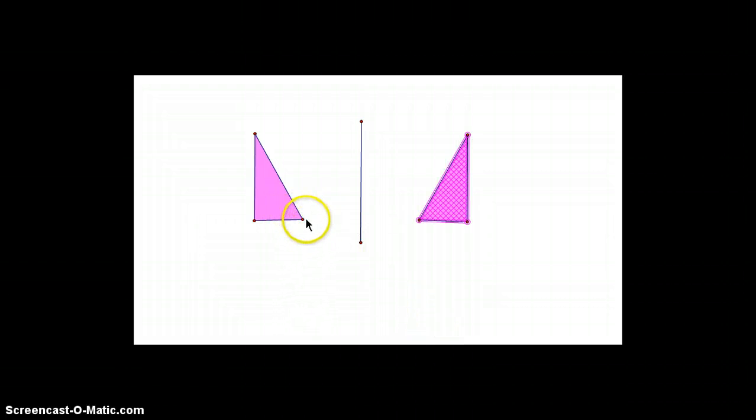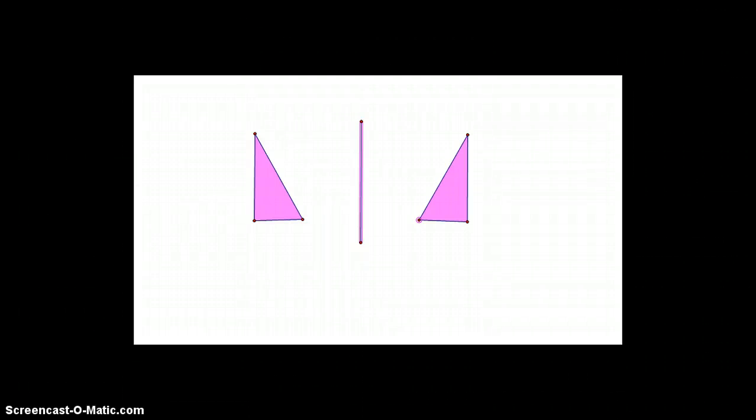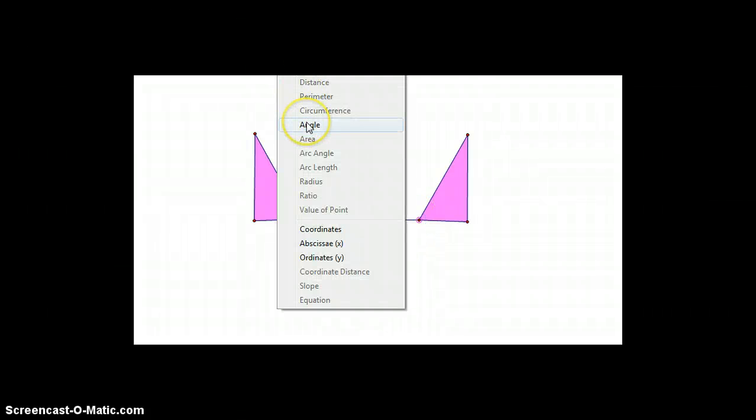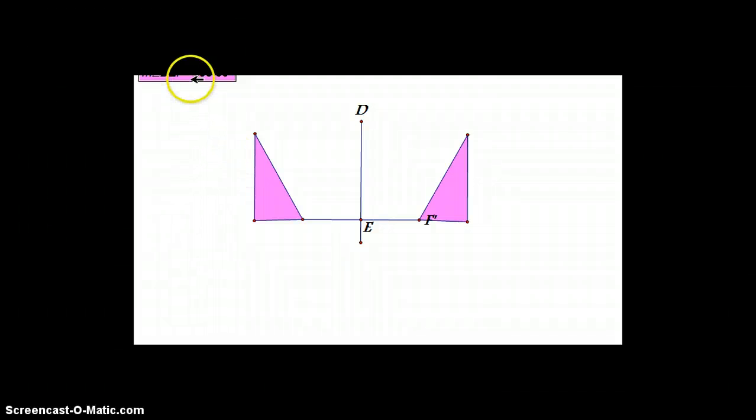If we measured the distance from this point to the mirror, it would be identical to this point to the mirror. It forms a perfect right angle. We can draw those in if we connect these points. We can measure this angle right here, and it is a 90-degree angle.